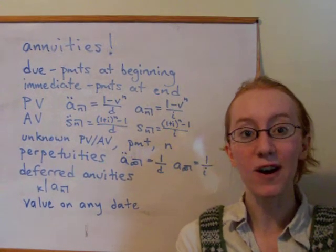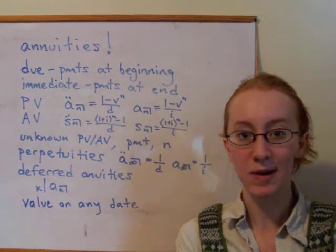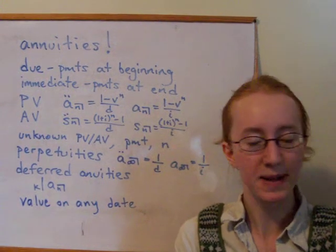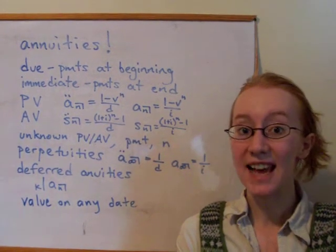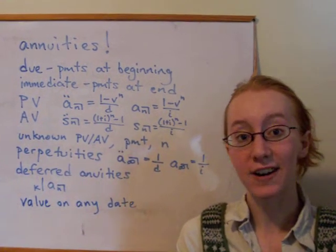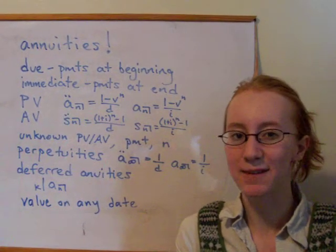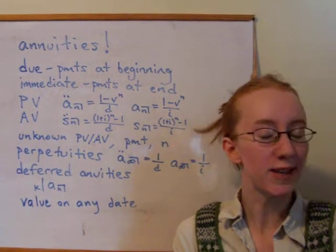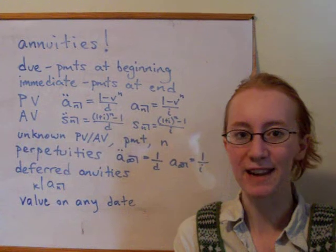imagine that the payments are continuing from time 0 all the way up to time n plus k minus 1. But then subtract off the payments that aren't actually made. So you can use a difference method to calculate the value of that deferred annuity as well. Whichever way you like best, that's the way you can think of it.